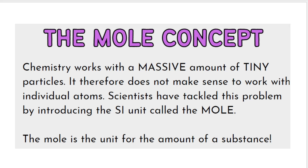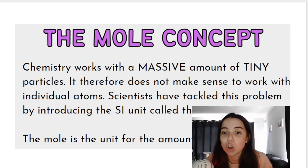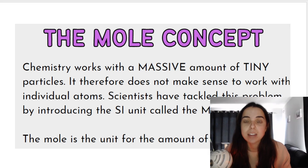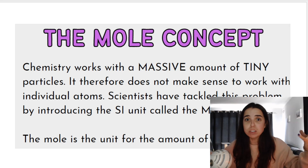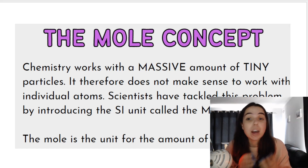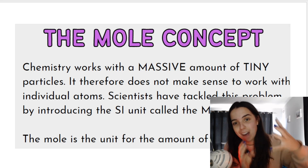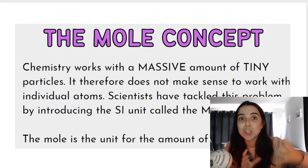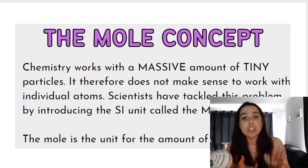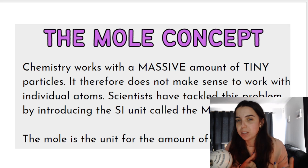Therefore, it doesn't make sense for scientists to work with individual atoms — we cannot keep count of individual atoms. Scientists have tackled this problem by introducing the SI unit called the mole, and the mole is the unit for the amount of substance. So if someone says they have two moles of oxygen, or two moles of sodium, they're telling you that they have a certain amount of that substance.